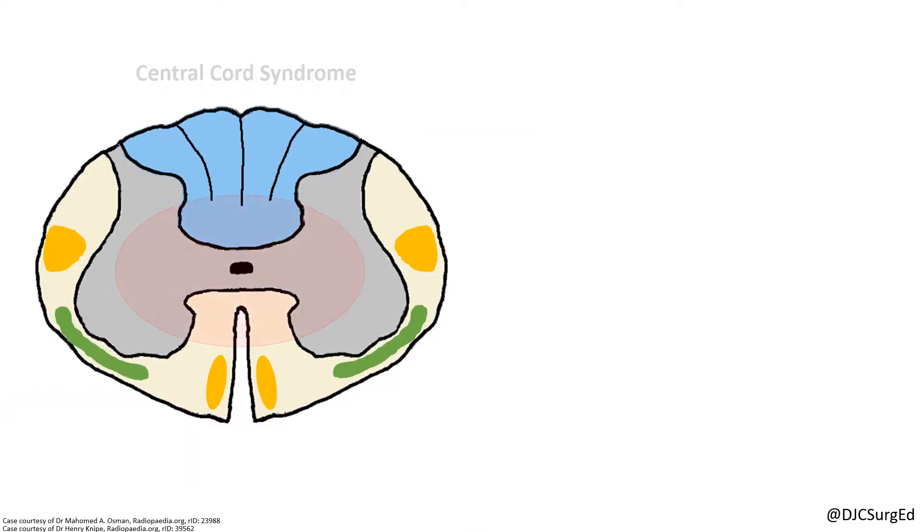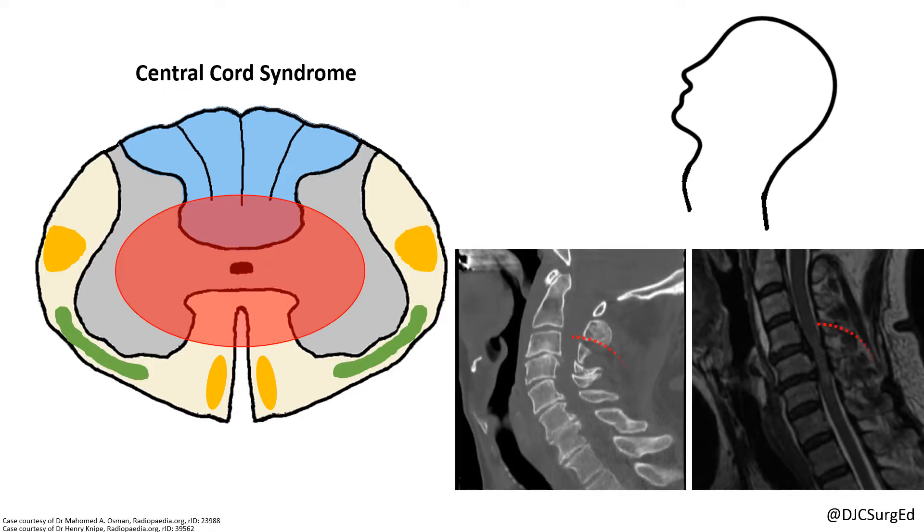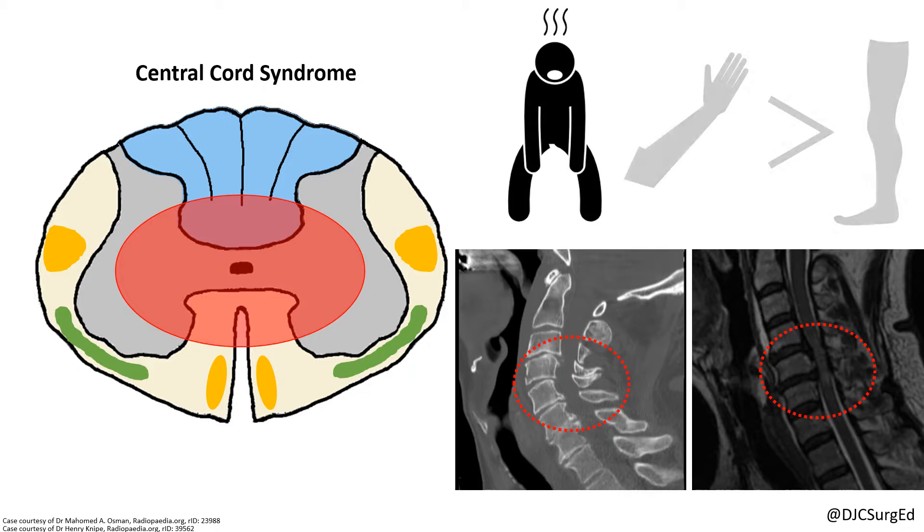Central cord syndrome can occur with a cervical spine hyperextension injury, usually in a person with long-standing cervical spine spondylosis, leading to bilateral motor weakness that is greater in the upper extremity.